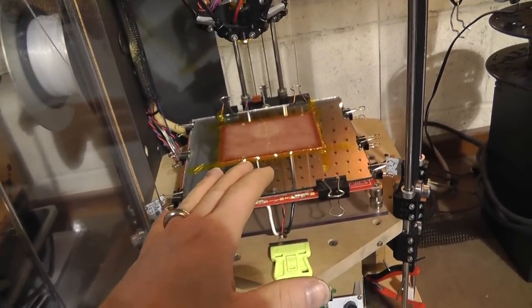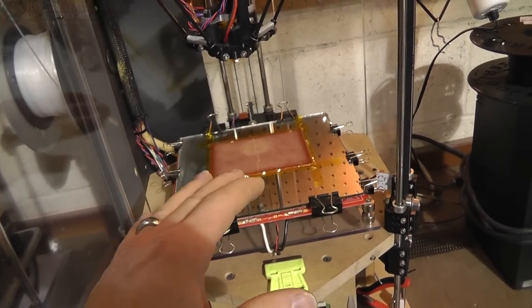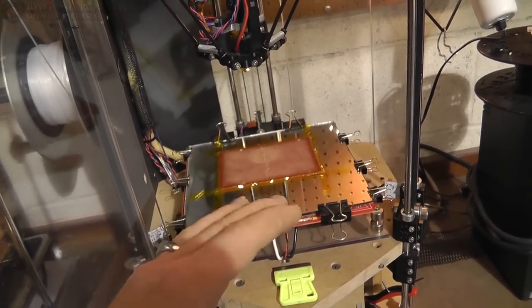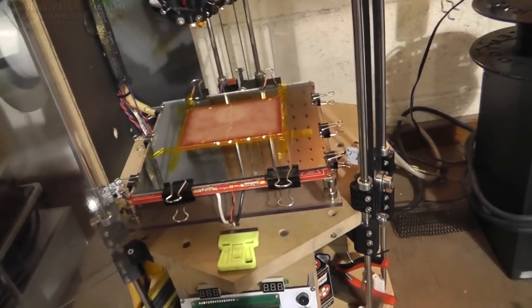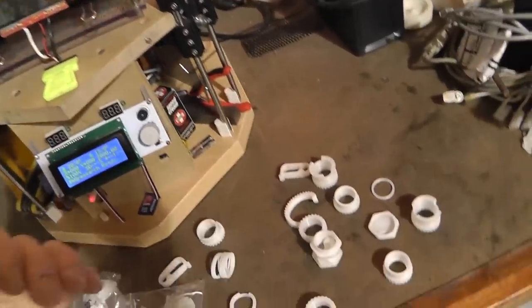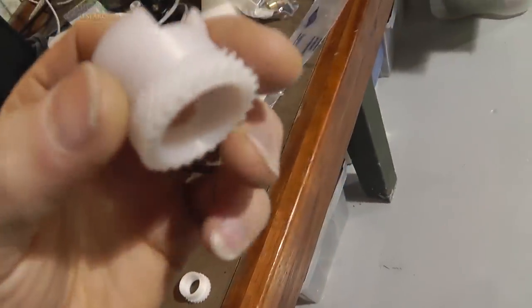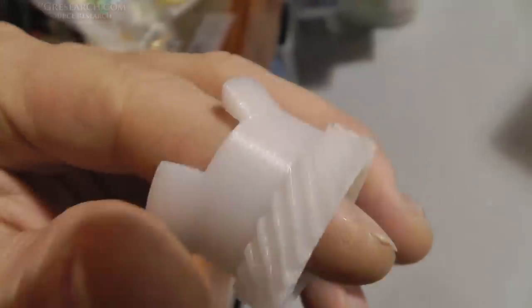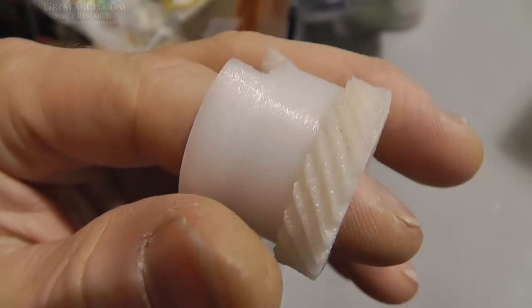But I also figured out that layer height - the thinner the layer up to about 0.06 millimeters. Up to that point it actually when you got down to that point it would be clear, be like this. Look how good this gear looks. See how it's almost like a clearish?